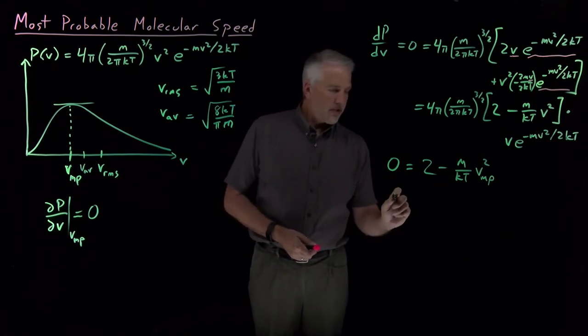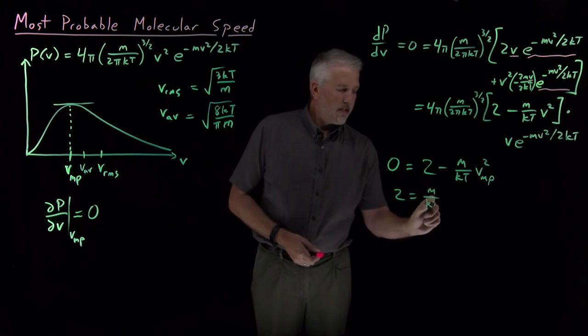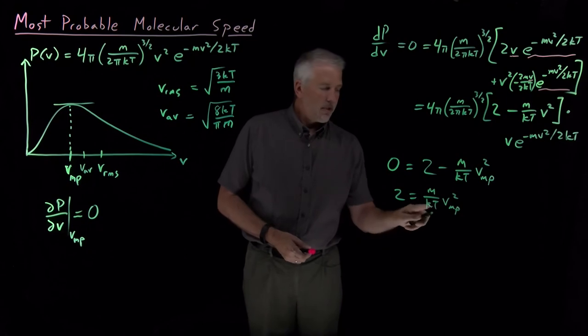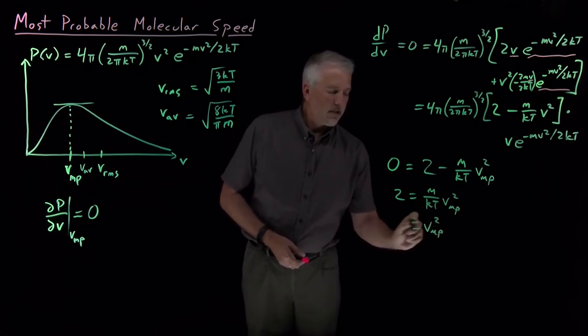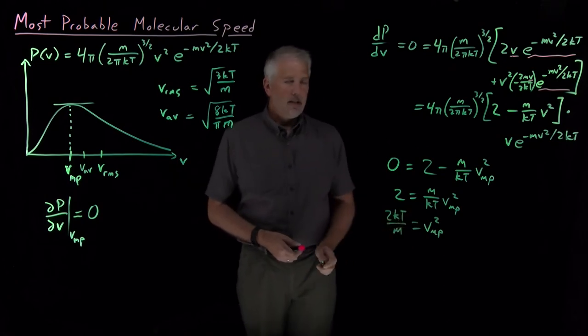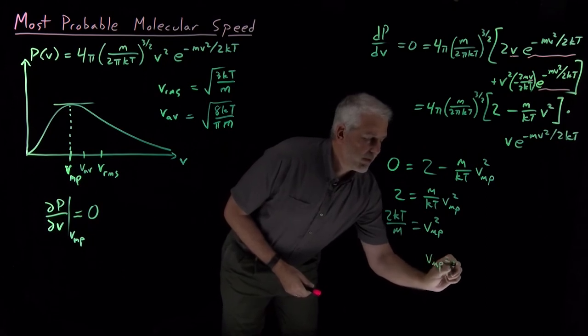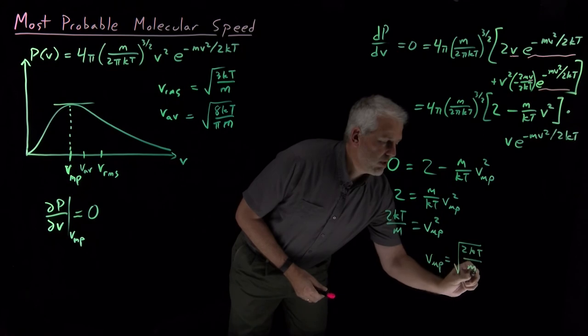So rearranging that equation, 2 is equal to (m/kT) most probable velocity squared. Bringing the kT and the m to the other side, my most probable velocity squared is 2kT over m. And then if I take the square root, V_MP is equal to the square root of 2kT over m.